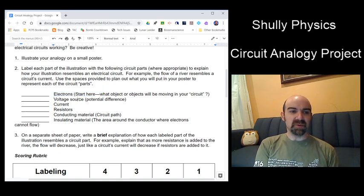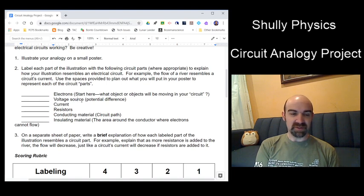Then think about what is the voltage source in your system, what pushes those electrons, what would be the current or the flow of those electrons, what represents that. Have fun with this one, the resistors. You might come up with three or four of these, maybe even more.